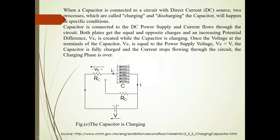When VC is equal to V, the capacitor is fully charged and current stops flowing through the circuit, and the charging phase is over.